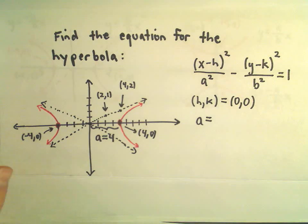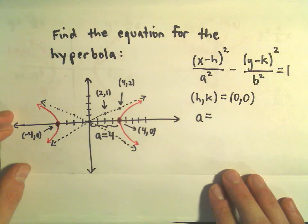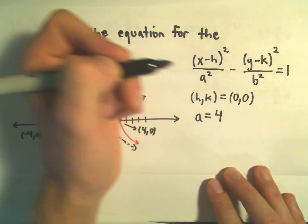Again, we're just simply moving 4 units to the right to get to that vertices. So a is 4.